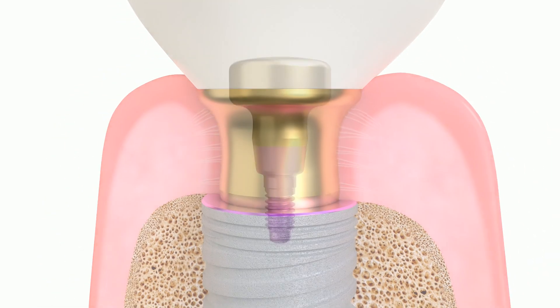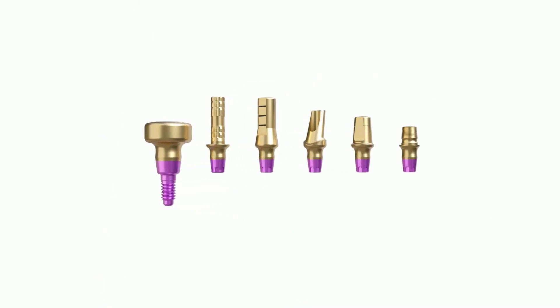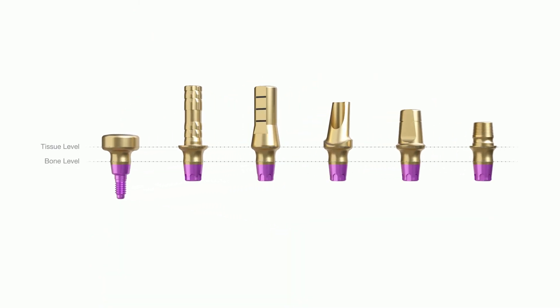The C1 implant system includes a variety of concave emergence profile abutments. This abutment profile was designed to give more room for soft tissue ingrowth.